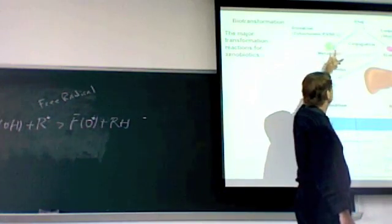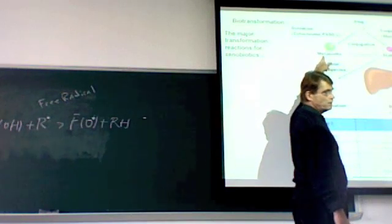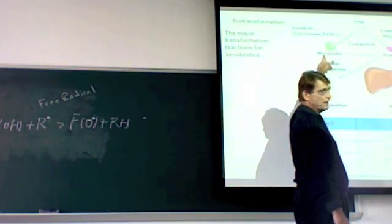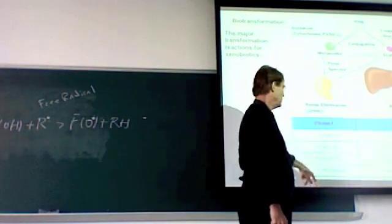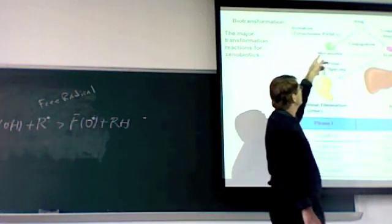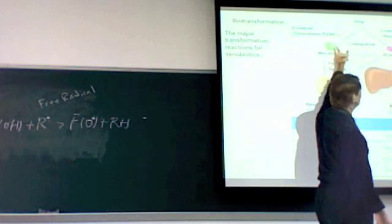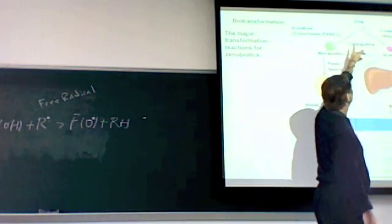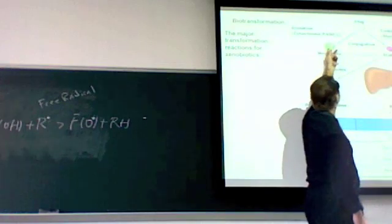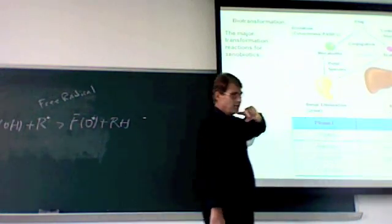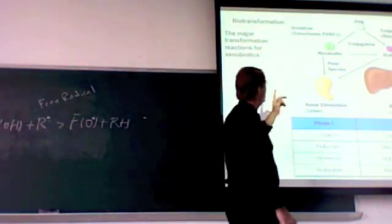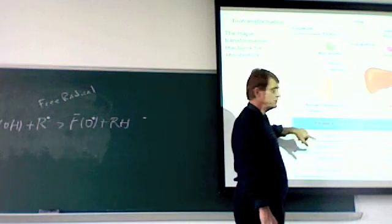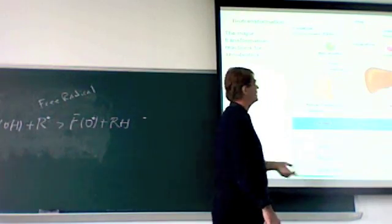Some toxins can be metabolized directly into something which is water soluble, so they're eliminated. This biotransformation from the toxin to the metabolite, those are all phase one reactions, which include oxidations, reductions, hydrolysis, and sublation.